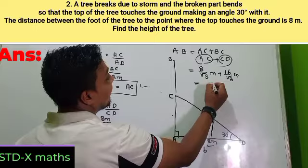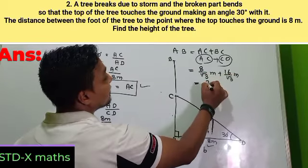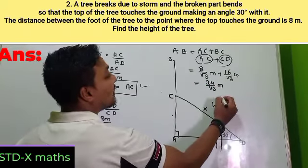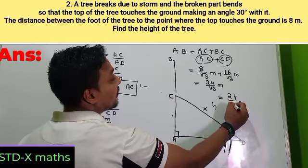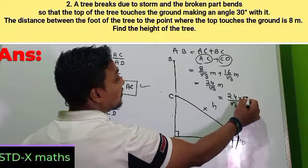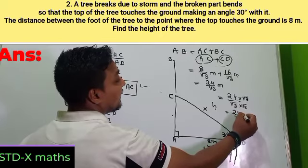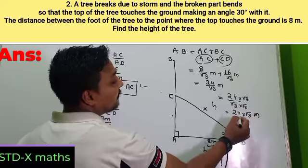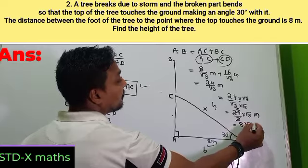So the height of the tree = SC + CD = 8/√3 + 16/√3 = 24/√3. Rationalizing: 24/√3 × (√3/√3) = 24√3/3 = 8√3 meters. The height of the tree is 8√3 meters.